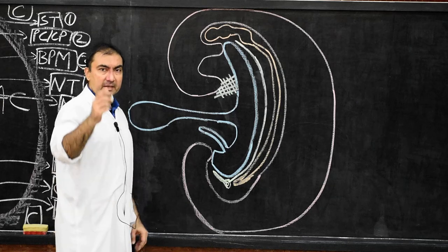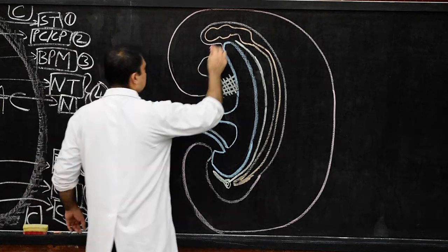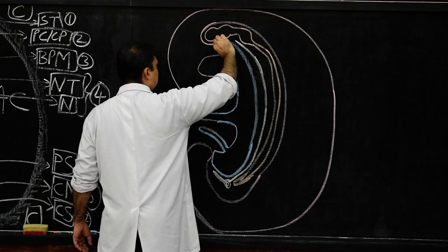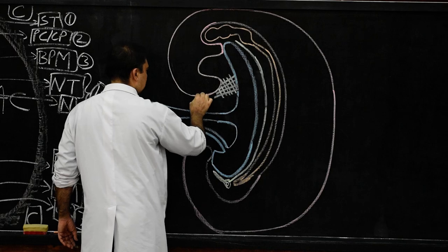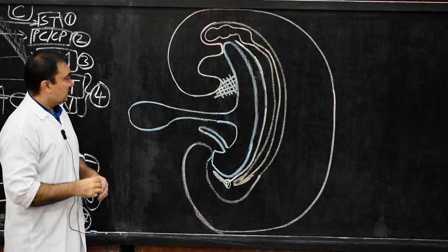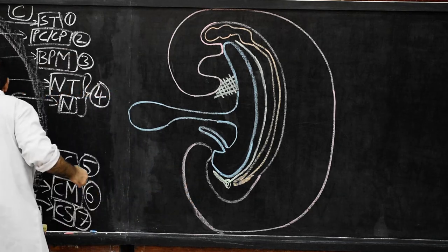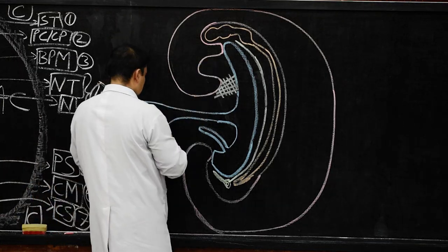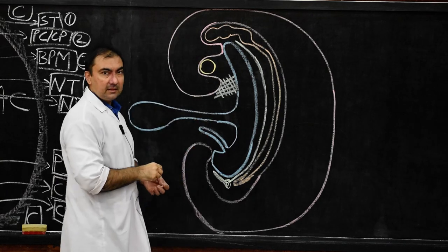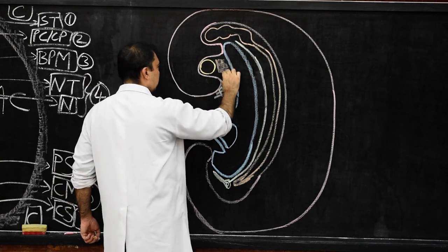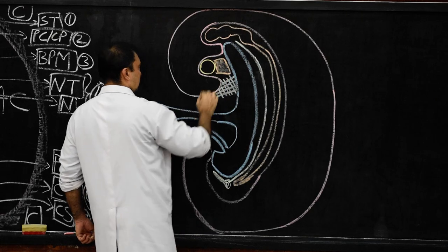Just above that is the pericardial cavity and the cardiogenic plate. Before drawing, I will draw and darken the amniotic membrane. The pericardial cavity now will lie in the ventral most direction and the cardiogenic plate will lie in the dorsal direction.